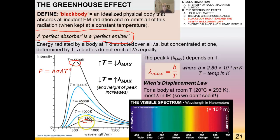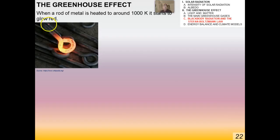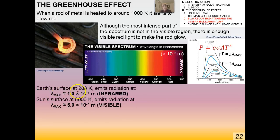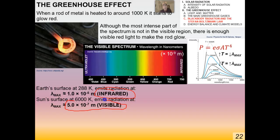The 293 K curve on this graph would be way over to the right, because this graph shown is at 3,500 K. When a rod of metal is heated to around 1,000 Kelvin, it starts to glow red — although the most intense part of the spectrum is not in the visible region, there is enough visible red light to make it glow. The Earth's surface at 288 Kelvin emits radiation at a maximum wavelength of about 1 times 10 to the minus 5 meters, which is in the infrared — the whole basis behind the greenhouse effect. The Sun's surface at 6,000 K emits at about 5 times 10 to the minus 7 meters, or about 500 nanometers, right in the visible part of the spectrum, which is really good for life on Earth.